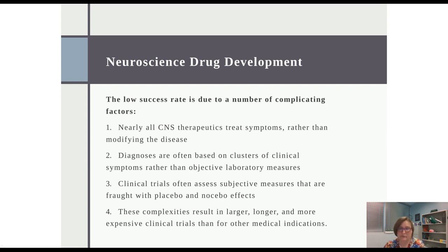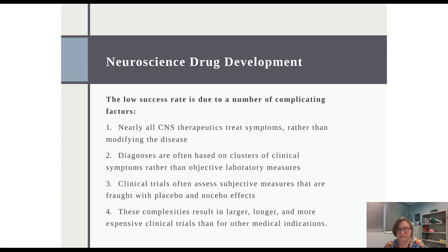Neuroscience drug development is particularly fraught with issues because it's not as simple as looking at a cholesterol drug where you can just look at LDL and HDL numbers, or a blood pressure medication where you're simply screening for a decrease in blood pressure. They have a very low success rate due to complicating factors, including that nearly all central nervous system therapeutics treat symptoms rather than modifying the disease. Diagnoses of CNS disorders are often based on clusters of clinical symptoms rather than objective laboratory measures. Clinical trials often assess subjective measures that are fraught with placebo and nocebo effects — nocebo effects being effects that are expected psychologically even though the person is receiving a placebo. These complexities result in larger, longer, and more expensive clinical trials than for all other medical indications.